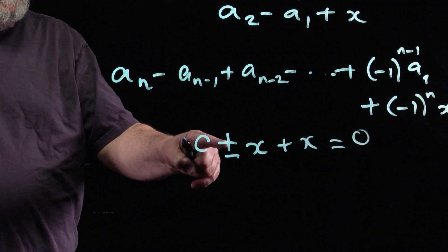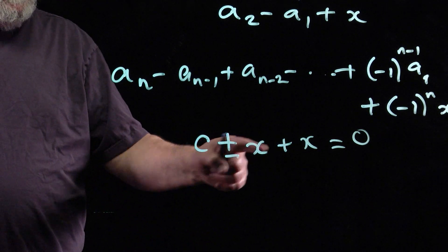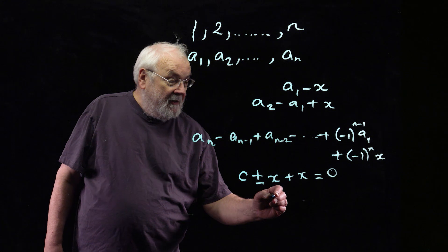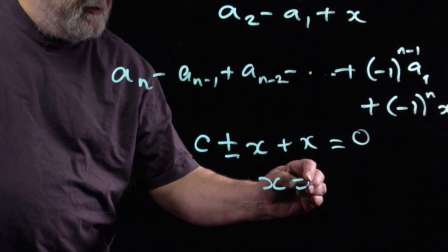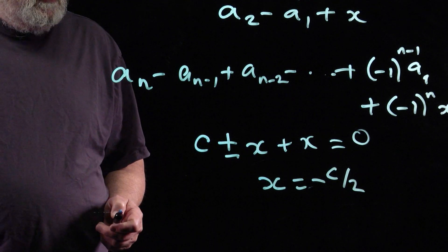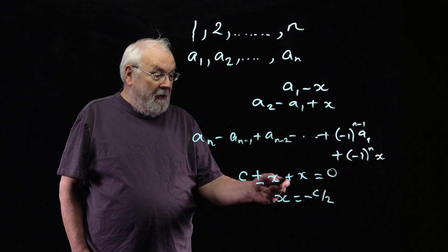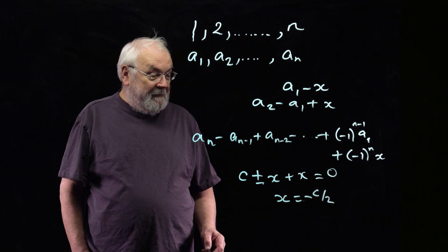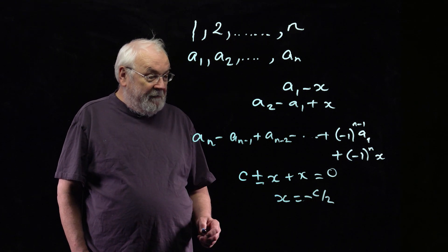Well, if you've got a plus sign here, you've got constant plus 2x equals 0, and that says that x is minus c over 2. And that's hopeless, because in order to get 0, c would have to be 0 and x would have to be 0. But you have no control over what x is.